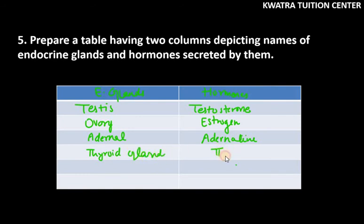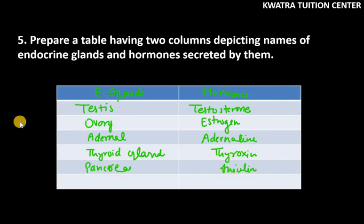Next is pancreas, and pancreas we know releases insulin. So these are the five endocrine glands and hormones secreted by them. This is the answer for question number five.